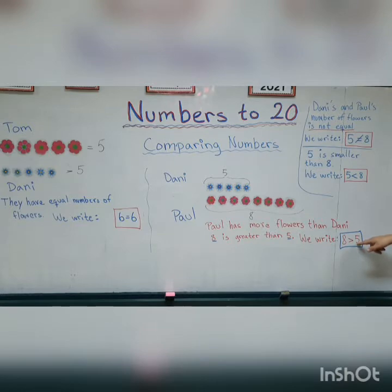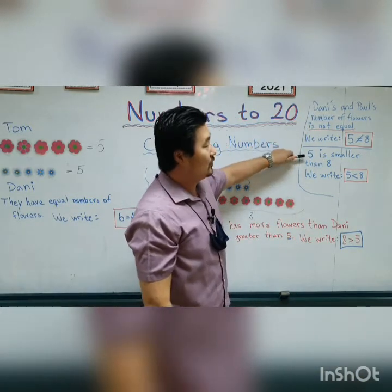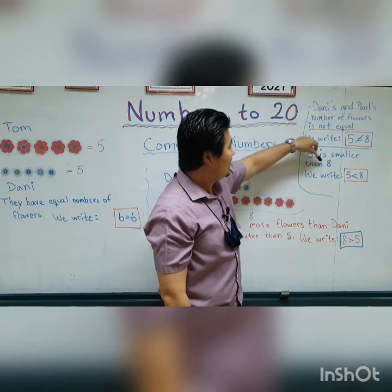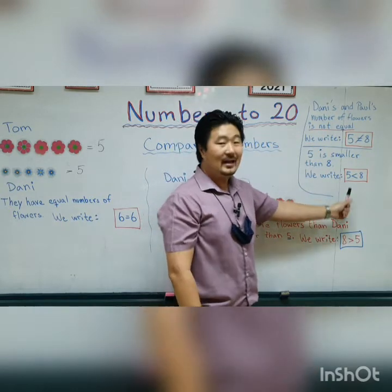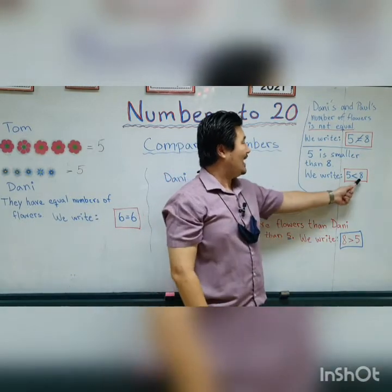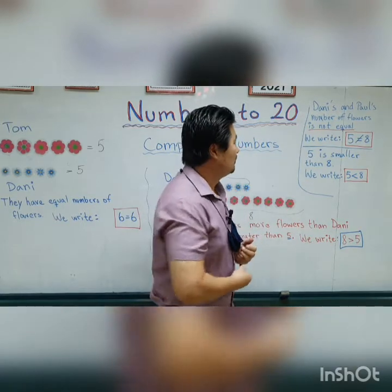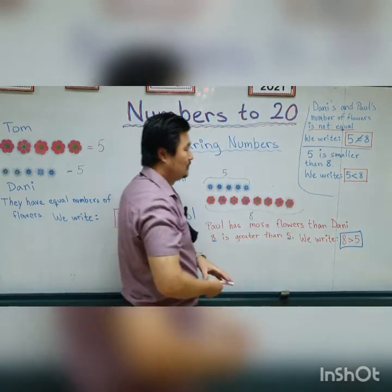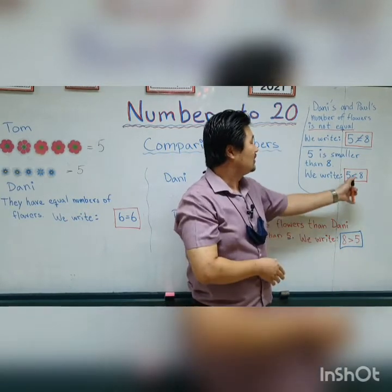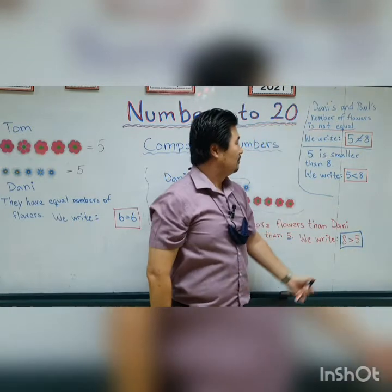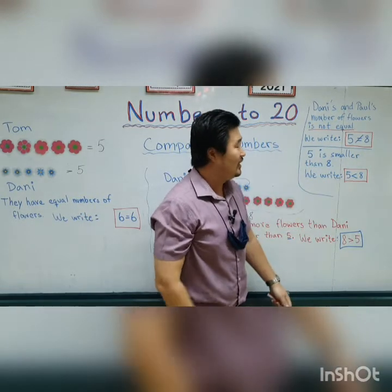And then five is smaller than eight. We write it as: five, then the crocodile mouth, then eight — but in the opposite direction, because now we have smaller. Before we had greater. For smaller than, the crocodile mouth should not face the smaller number; it should face the bigger number. You start by writing the smaller number first and then do the crocodile mouth in the opposite direction.